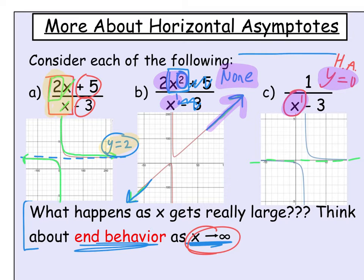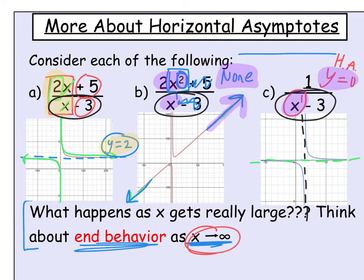All three examples actually share the same vertical asymptote. The vertical asymptote comes from values that make the denominator zero. The denominators in all three were x minus 3, which means there's a vertical asymptote at x equals positive 3. It's easiest to see in the third example due to the scale.